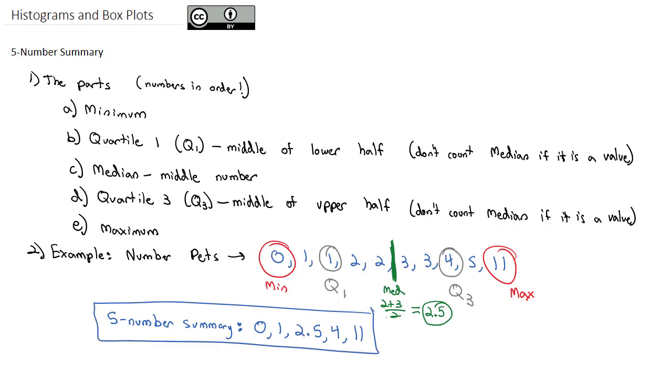And I know in order, those are the minimum, quartile 1, the median, quartile 3, and the maximum.